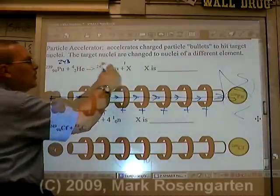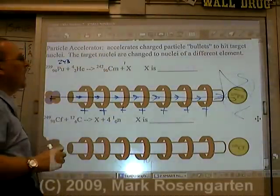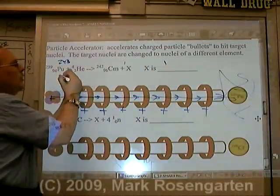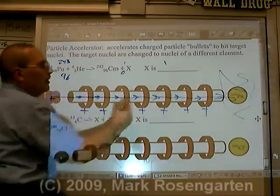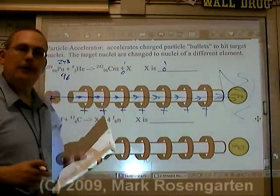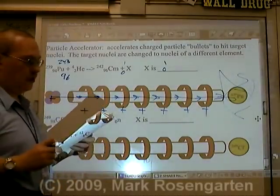Well, 1, right? Because 242 and 1 is 243. That makes it add up to the same thing on both sides. So that's mass. Now for charge: 94 and 2 is 96 equals 96 plus 0. Now to find what this mystery particle is, we look on reference table O.